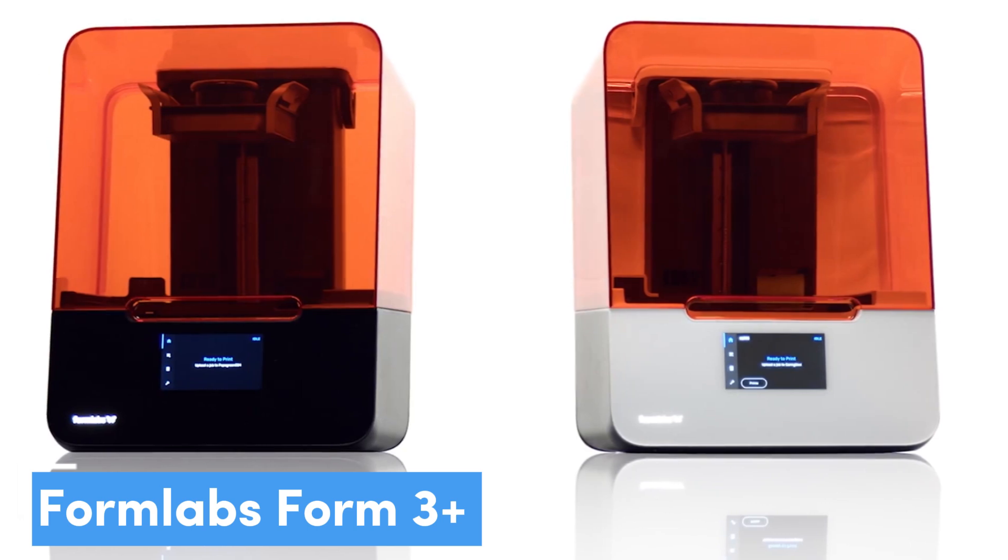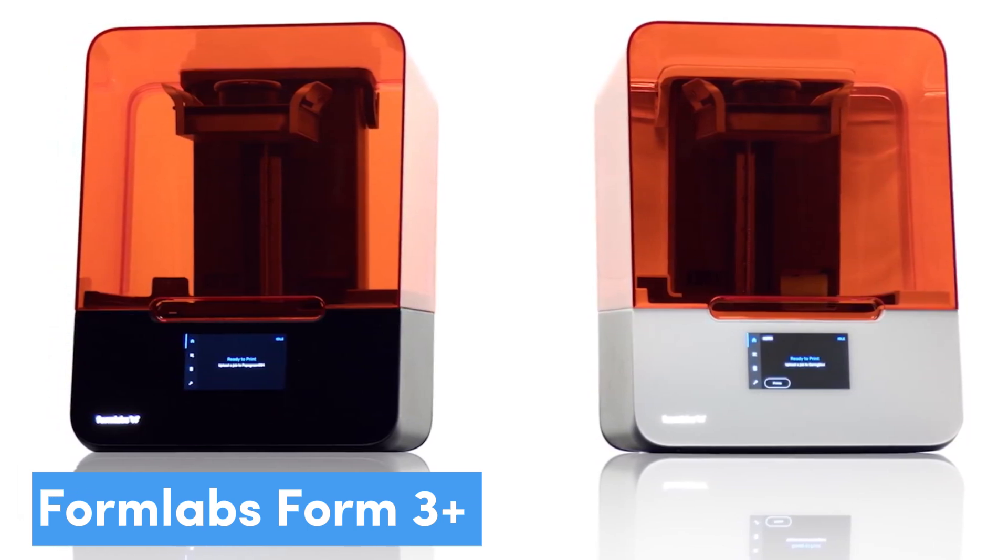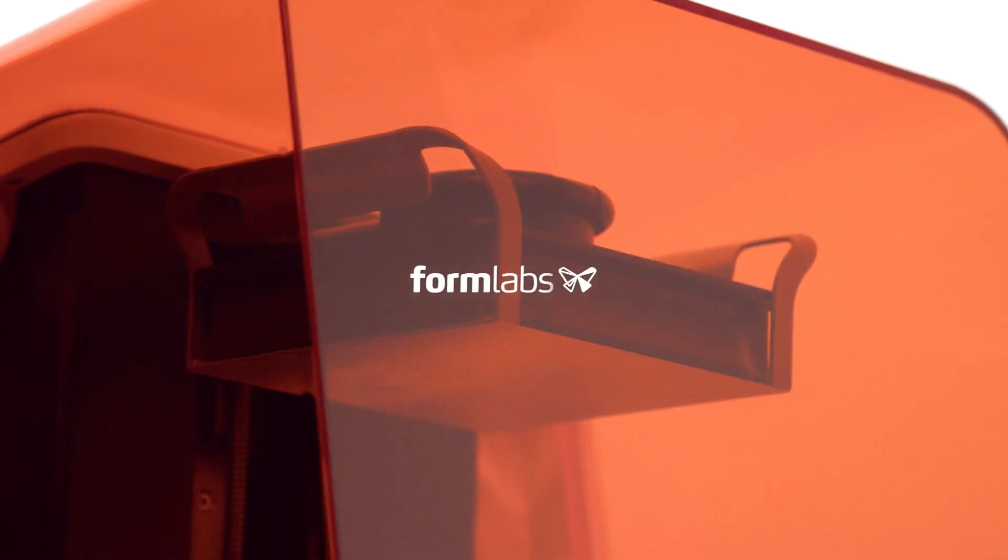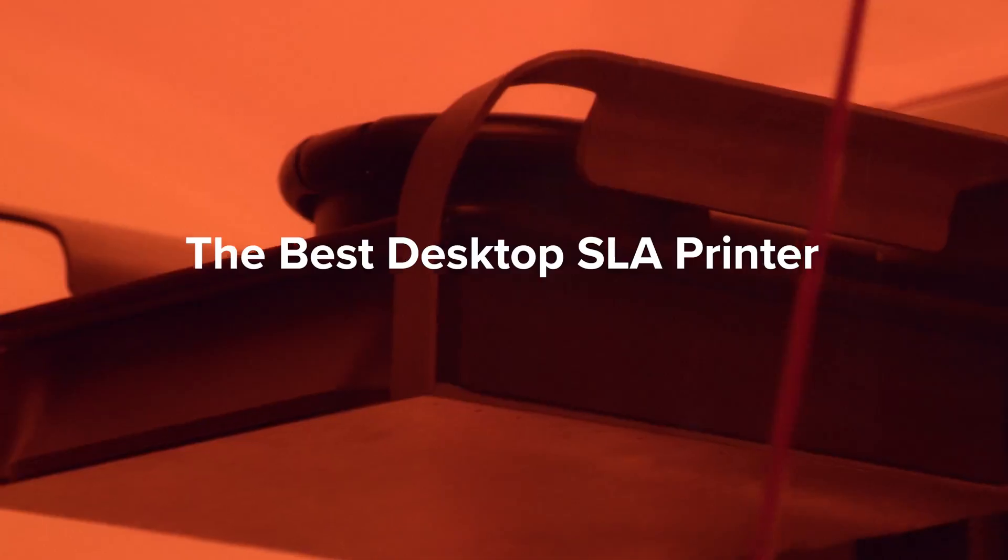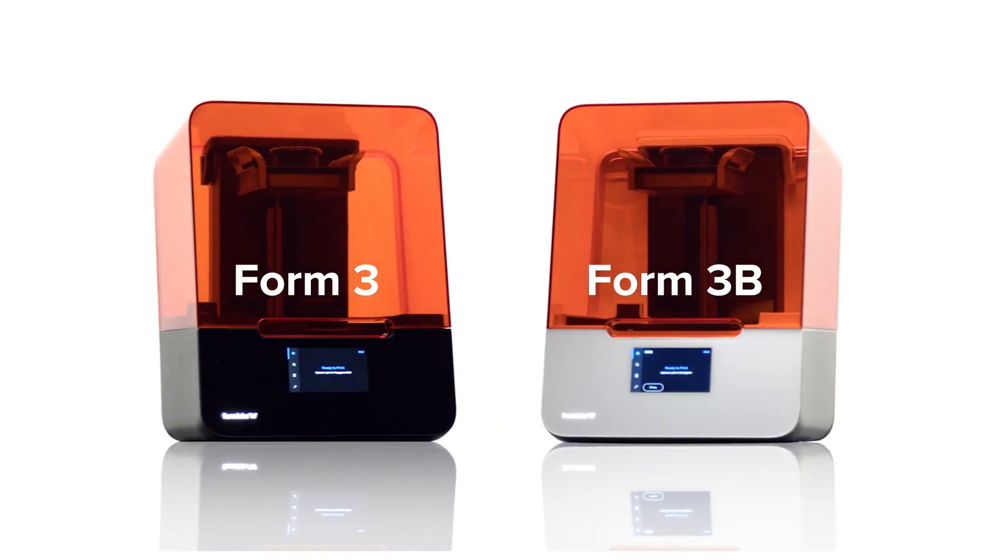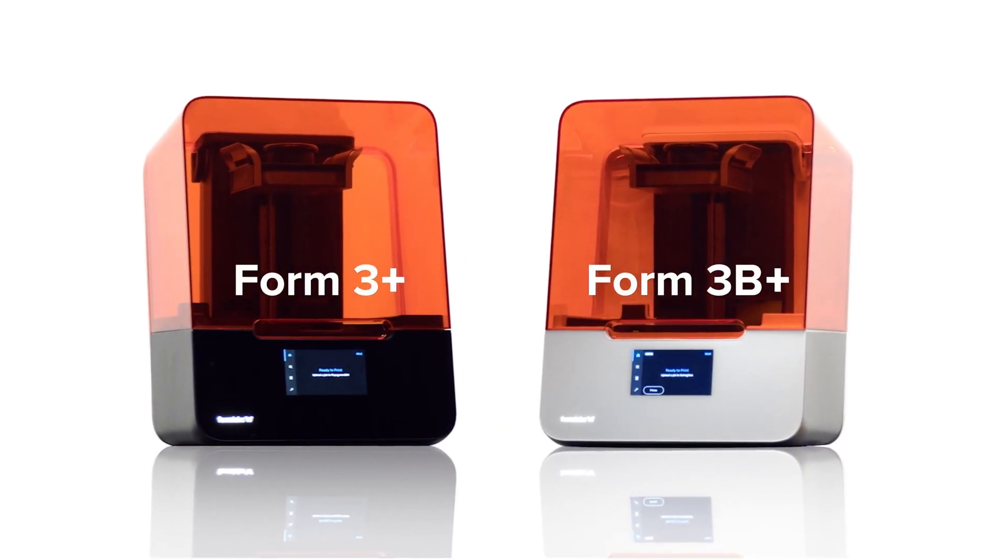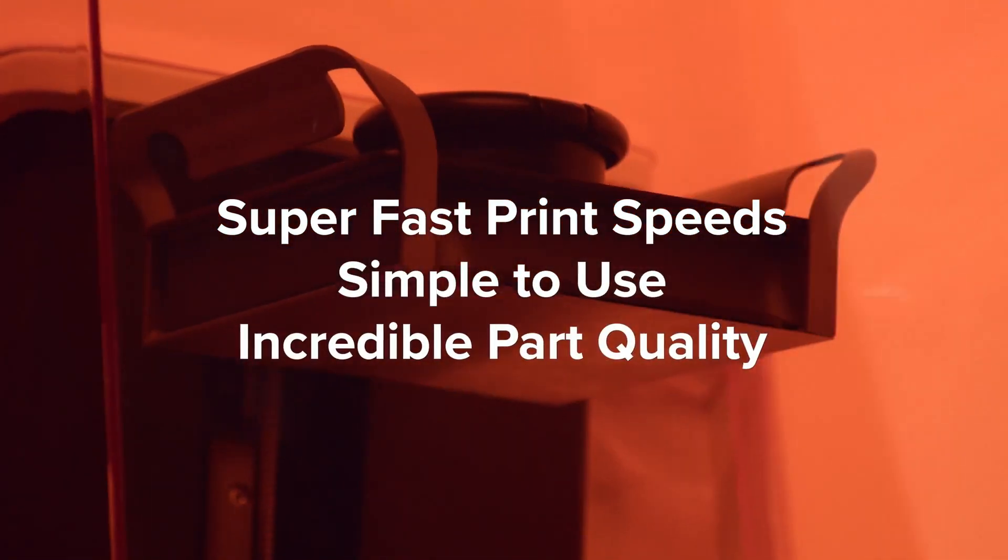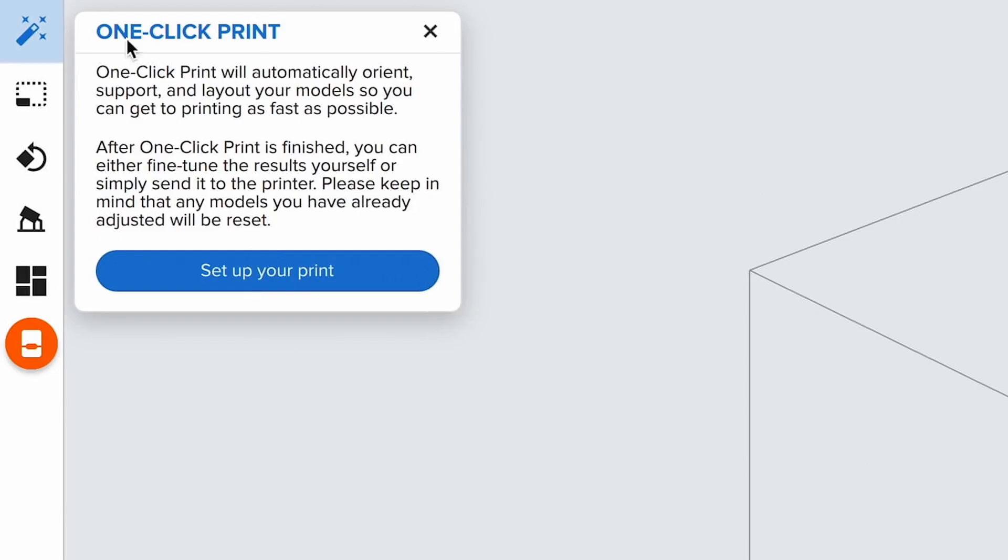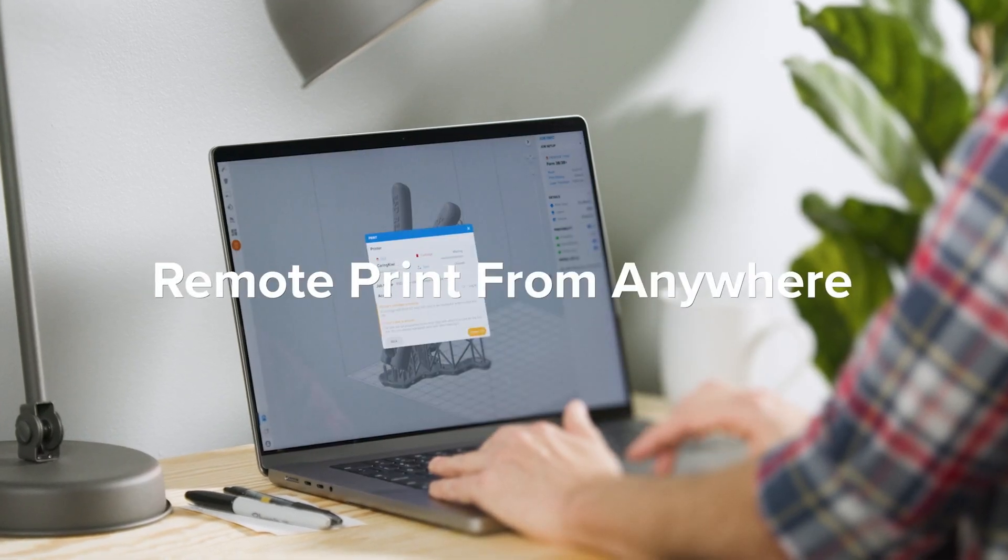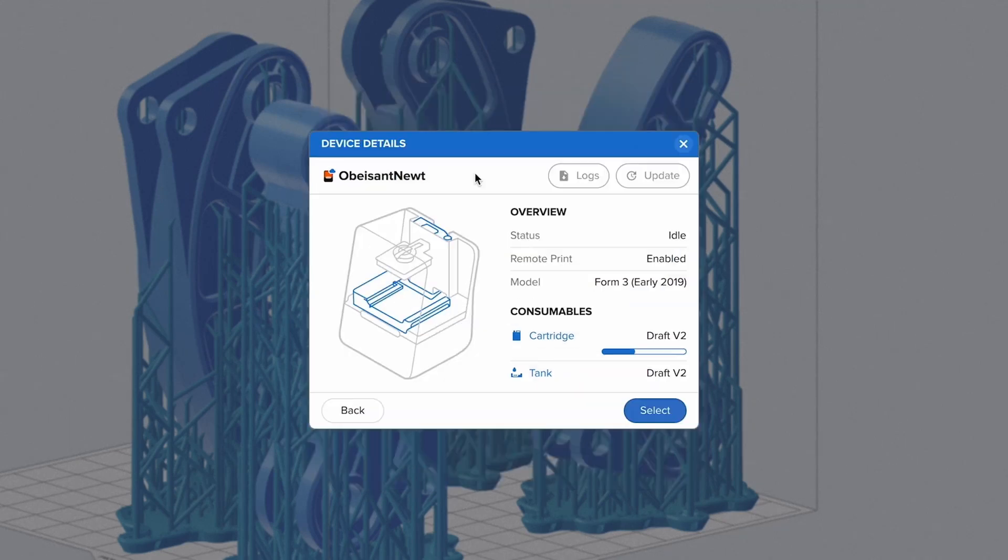Number 3, Formlabs Form 3 Plus – The Best Resin-Based 3D Printer. Resin-based printers have seen a lot of competition from lower-priced devices in recent years, but the Form 3 Plus from Formlabs remains the device of choice if 3D printing is a regular part of your workflow. The Form 3 Plus replaced the Form 3, formerly our top pick for resin printers. This new version churns out prints faster than before, and it's much easier to use than before.